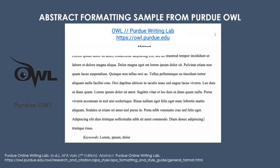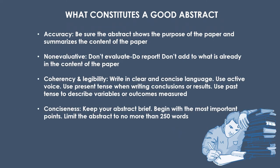This is a sample of an abstract from Purdue Online Writing Lab. The title 'Abstract' is typed in boldface and centered. Don't indent at the beginning of the paragraph. At the bottom, you can indent and italicize 'Keywords' and then list any of the keywords you're using. A solid abstract is accurate, non-evaluative, coherent, legible, and concise. Remember, do not exceed 250 words.